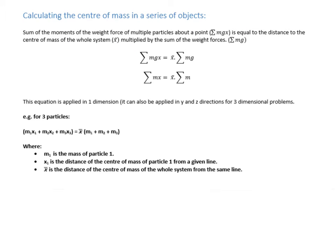So in order to calculate the center of mass of a series of objects all put together, we need to use a very simple equation. But in order to understand where it comes from, we need to be thinking about the principles of moments. So the moments of the weight forces of each of the particles separately should be equal to the weight force, sum of the weight force of all of them, multiplied by the distance to the center of the mass in a given direction.